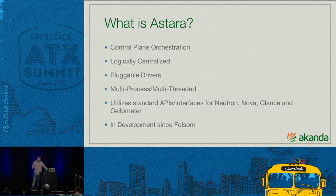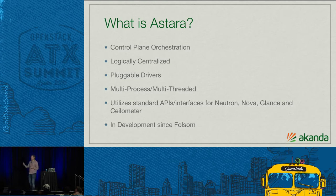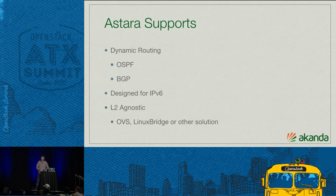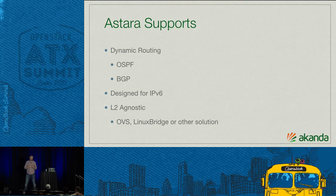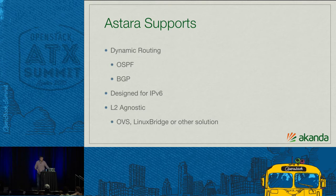Astara started development in Folsom and went into production in 2013. While the project joined the big tent last fall, it's been going and in constant development for some time. Astara supports dynamic routing — both OSPF and BGP. It's pluggable; the current appliance produced for testing is based on BIRD, and you can easily integrate Quagga. It's designed for IPv6 from the ground up. We started playing around with IPv6 even before Neutron had full support for it. And it's L2 agnostic — you can run OVS, Linux Bridge, or something else.